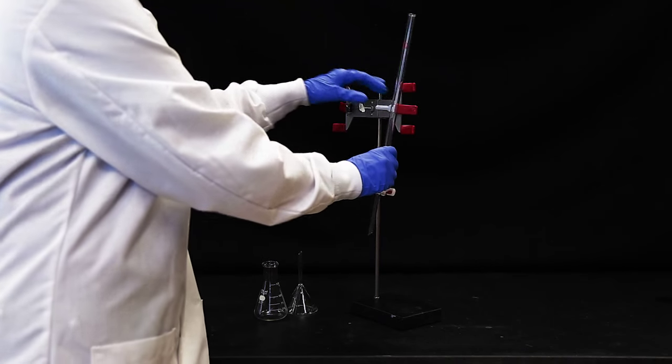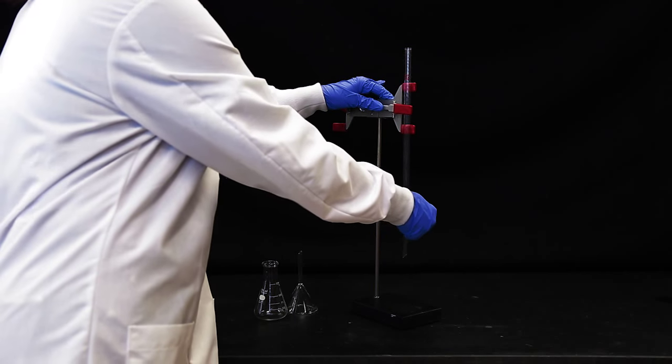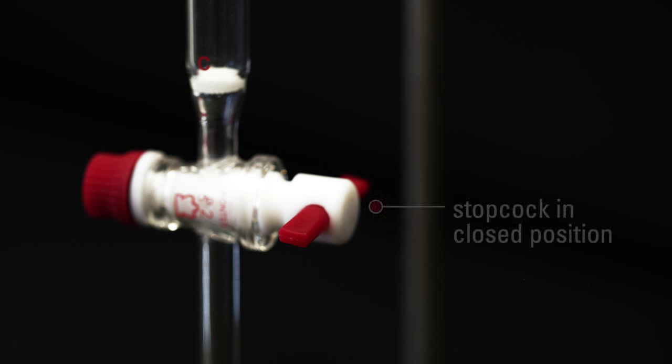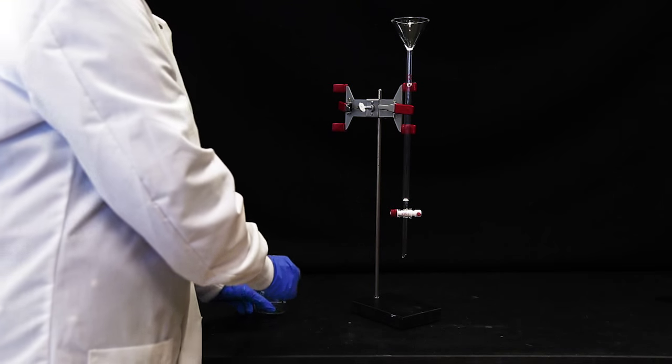To begin, use a burette clamp to secure the column to a ring stand. Make sure that the stopcock on the column is in the closed position. Insert a glass funnel into the top of the column.